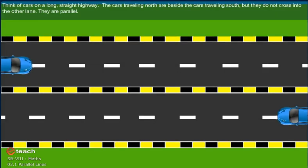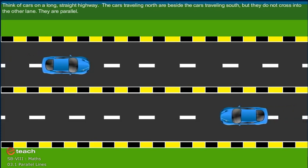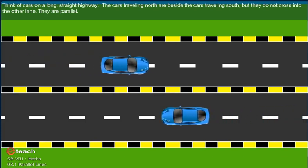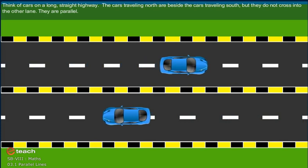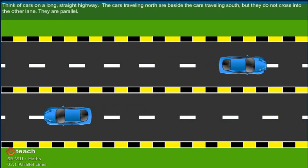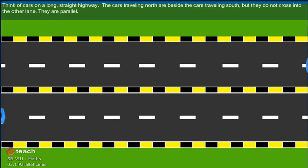Think of cars on a long straight highway. The cars traveling north are beside the cars traveling south, but they do not cross into the other lane. They are parallel.